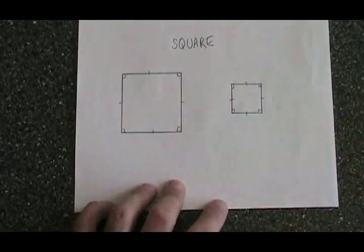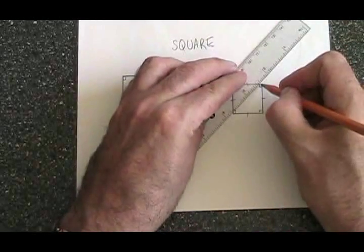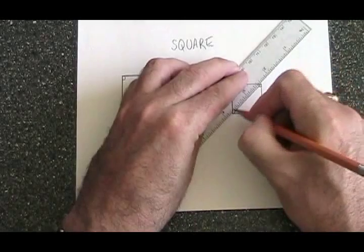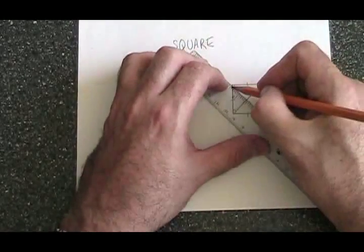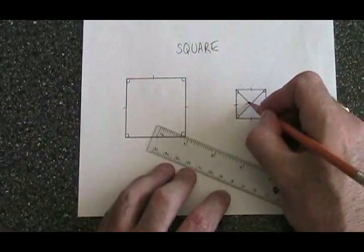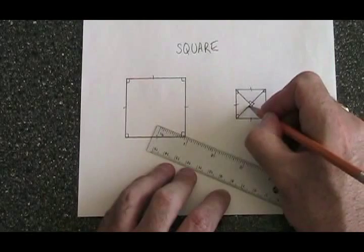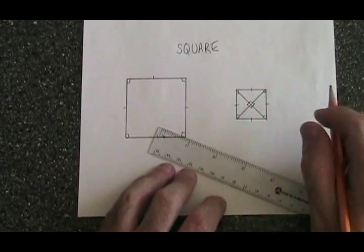The diagonals of a square cross each other at right angles. So therefore these four angles are all also 360 degrees. And the diagonals of a square have to be equal in length to each other.